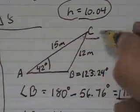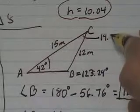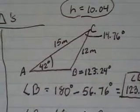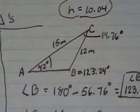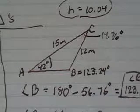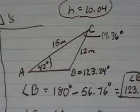So up here we can write 14.76 degrees. Now, I know angle A. I know angle B. I know angle C. I know side A. I know side B. What's left? Side C.